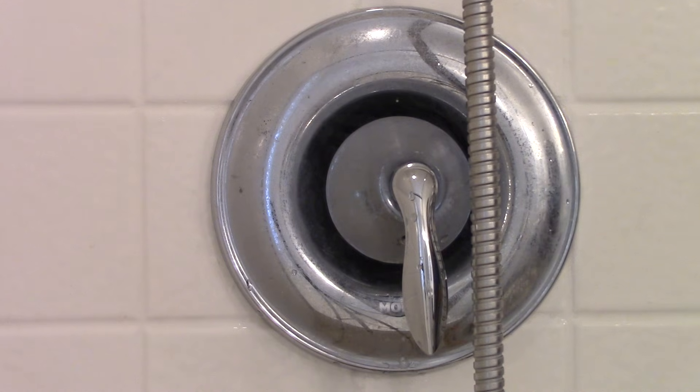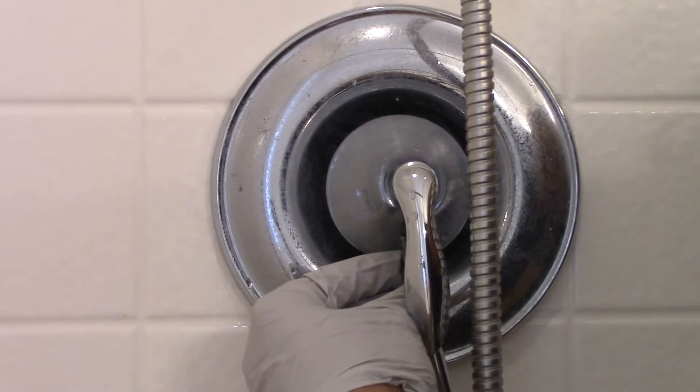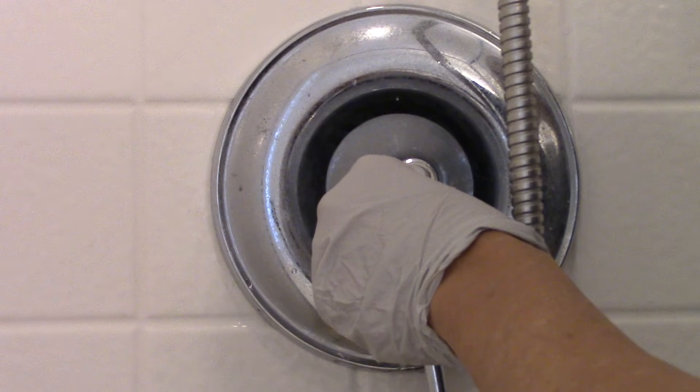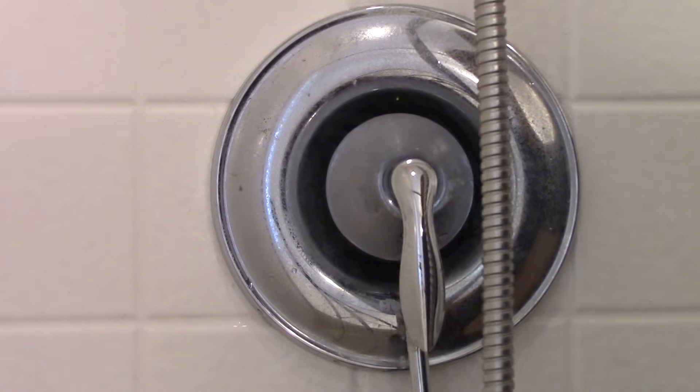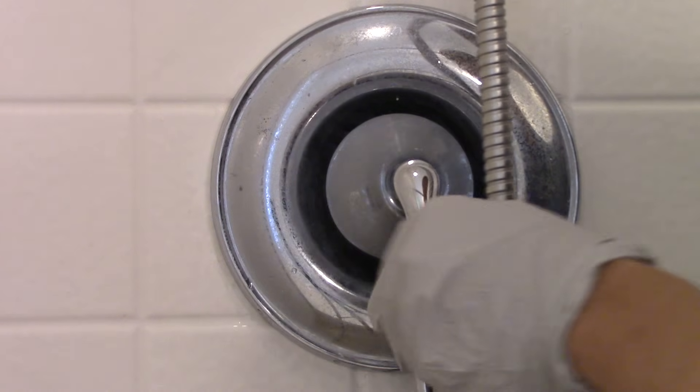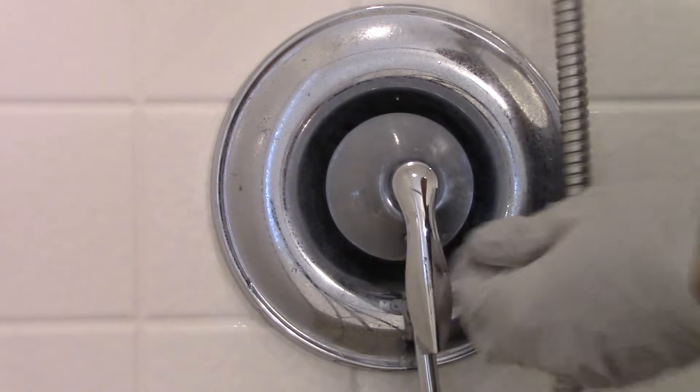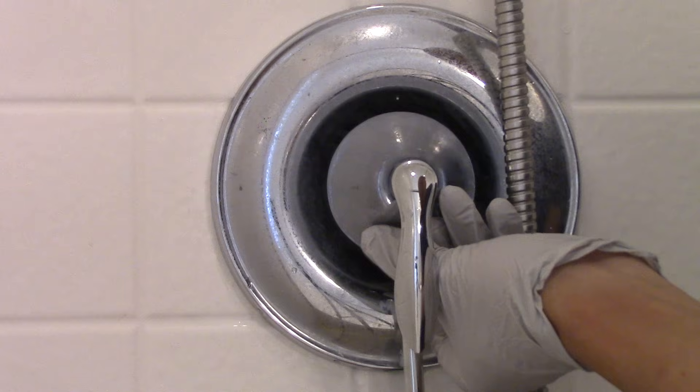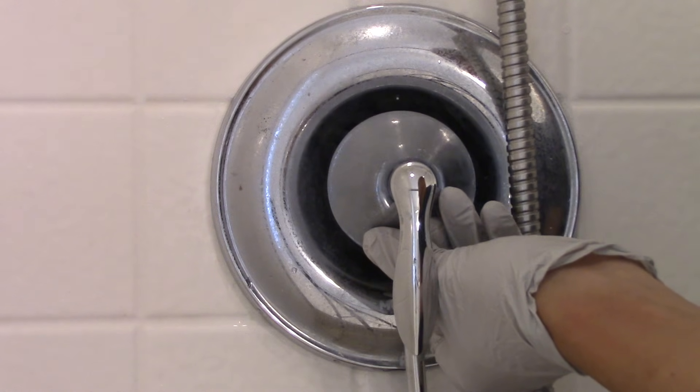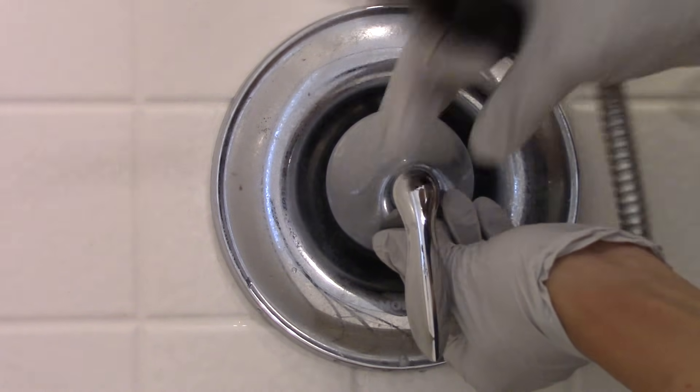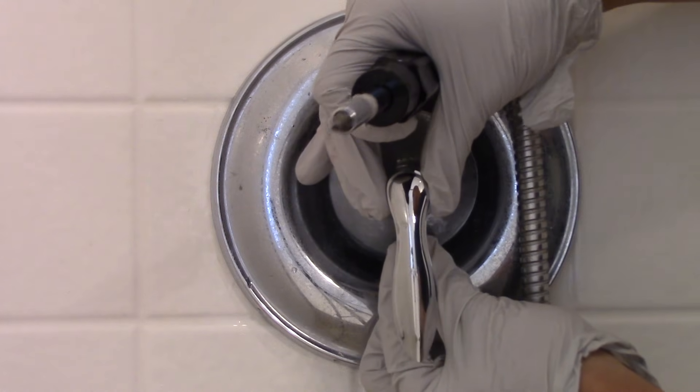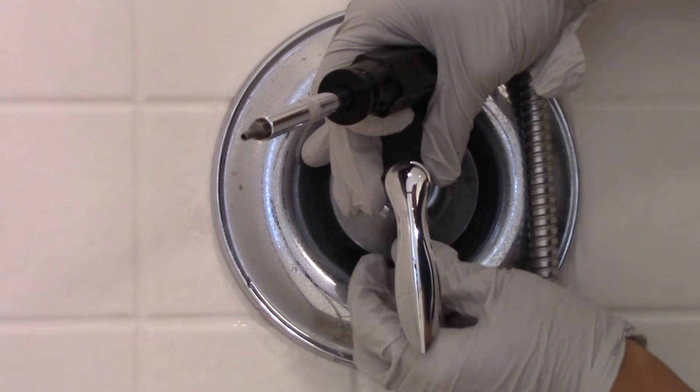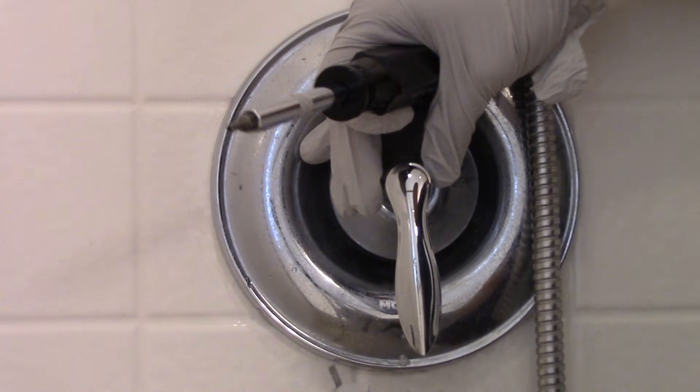First thing I do is shut off the water and then take this handle off. There's an Allen wrench right underneath. You can see that. Pull straight down and screw it a little bit more. There you go.